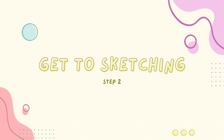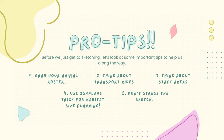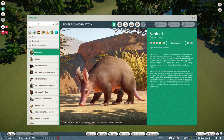Now that we have an idea about our layout, we're going to get to sketching. Before we jump in with pen to paper, here are a couple of pro tips. First, grab your animal roster and have it handy. Think about your transport rides or your staff areas. The biggest tip I have is to use ZSH Plays' trick for habitat size planning when you're getting started on your map, and then don't stress the sketch — it's just a sketch.